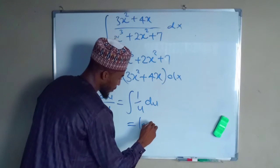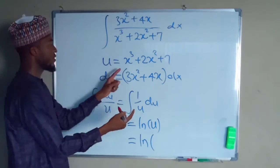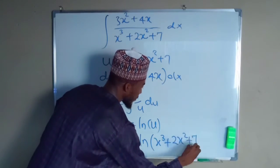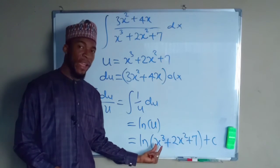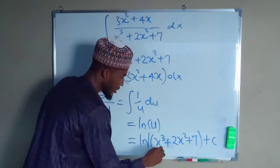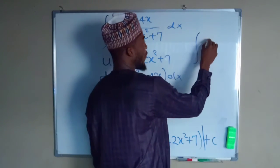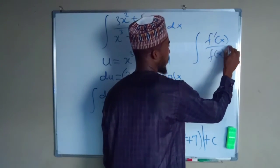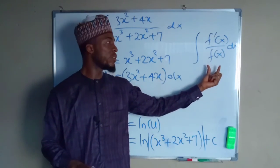This is equal to the natural log of u, which is x cubed plus 2x squared plus 7, plus the constant of integration. Since we have x cubed, if x is negative then x cubed will be negative as well, so we have to add the absolute value. This is how to find the integral of a function in the form of f prime of x divided by f of x with respect to x, if and only if the numerator is exactly the same as the derivative of the denominator.